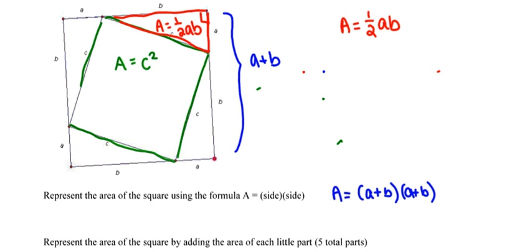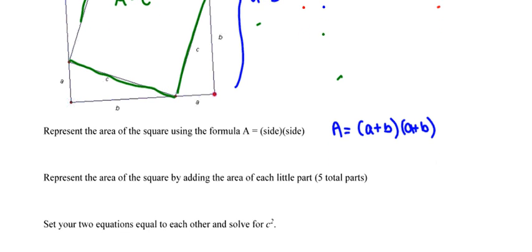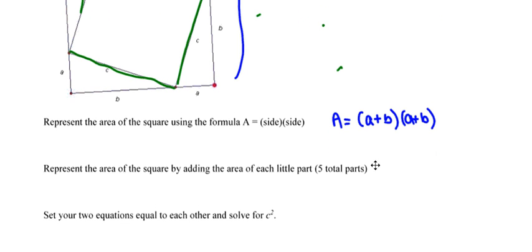So as far as the area of the entire square, the area of the entire square is going to be the area of the little green square in the middle, C squared, plus four of those triangles whose area is one half times A times B.